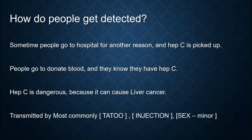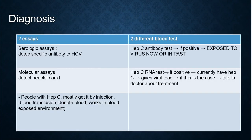People may go to donate blood and discover they have hepatitis C through testing. Hepatitis C is dangerous because it can cause liver cancer, and it is most commonly transmitted by tattoo needles or injection. For this case, intercourse is a less common route. For diagnosis, we have two assays and two blood tests — serologic assays and molecular assays. Serologic assays detect specific antibodies to HCV, and molecular assays detect nucleic acid. People with hepatitis C mostly get it by injection, blood transfusion, donating blood, or working in blood-exposed environments.